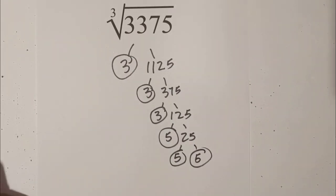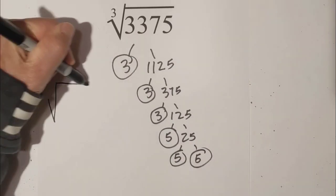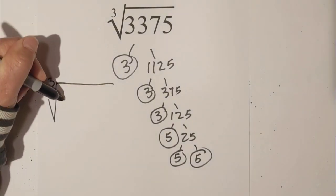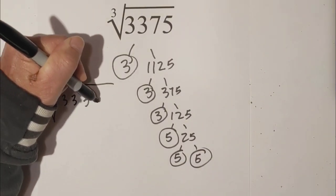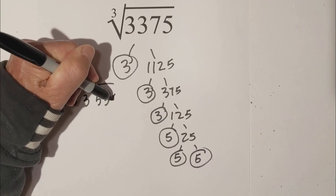So here's all our numbers, and so now let's place it under the cube root sign, so we have 3, 3, 3, 5, 5, and 5.